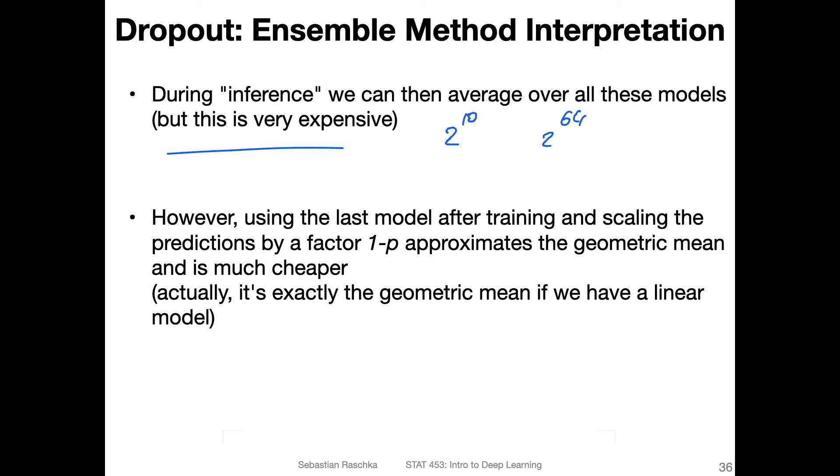Actually, the regular dropout technique that we discussed earlier essentially is already computing this geometric mean, or essentially, it's approximating this geometric mean. Because the scaling factor that I mentioned, the (1-p) that we use to scale the data after training when we use the model for testing, this is essentially an approximation of this geometric mean.